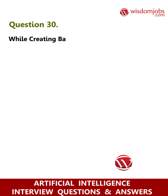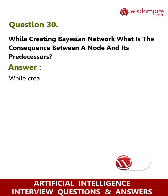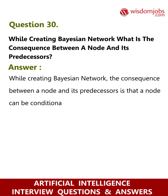Question 30: While creating a Bayesian network, what is the consequence between a node and its predecessors? Answer: While creating a Bayesian network, the consequence between a node and its predecessors is that a node can be conditionally independent of its predecessors.